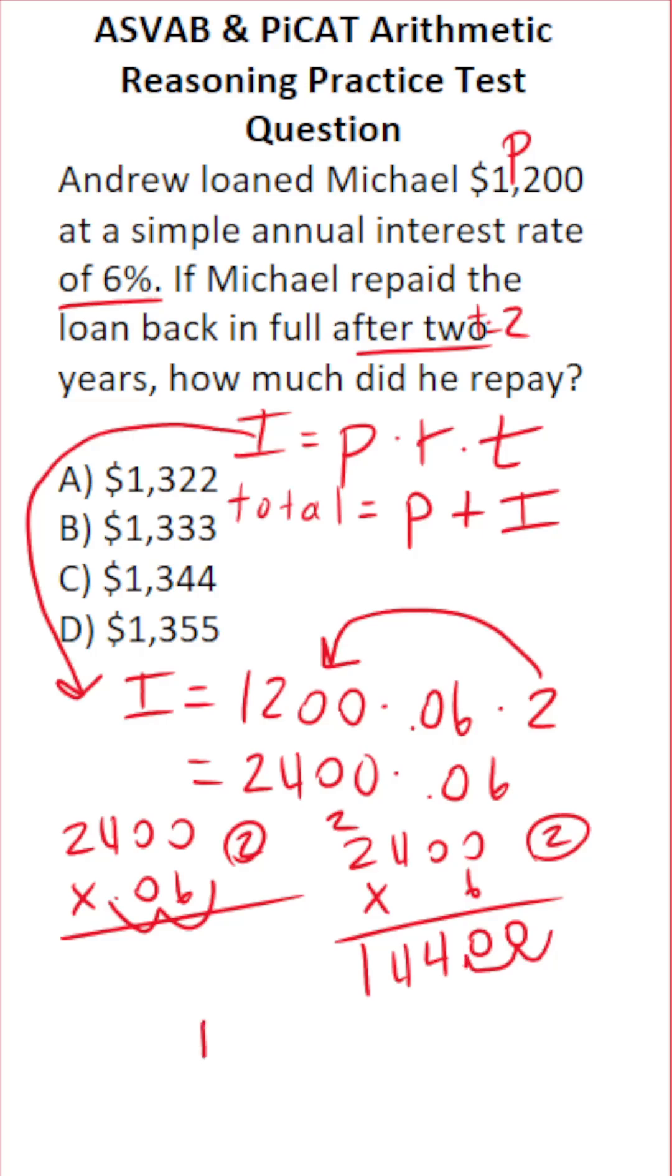So we can see that the amount of interest that accrued on this loan of $1,200 was $144.